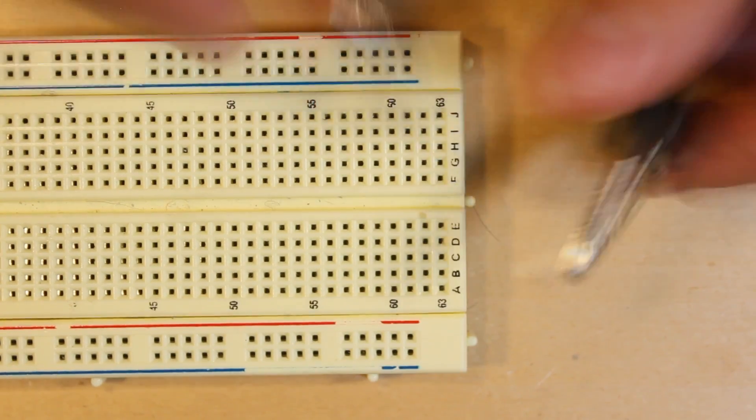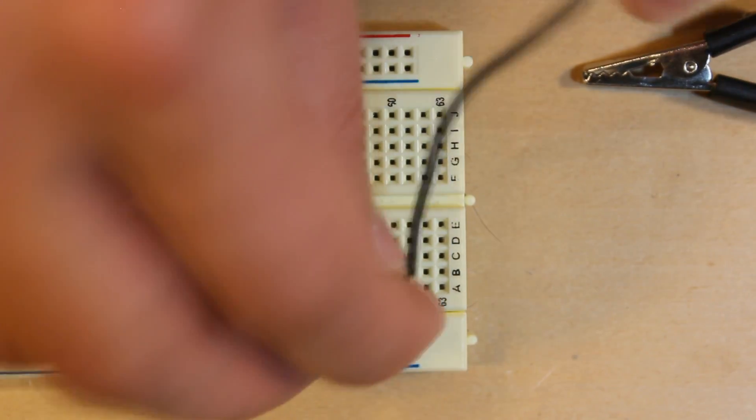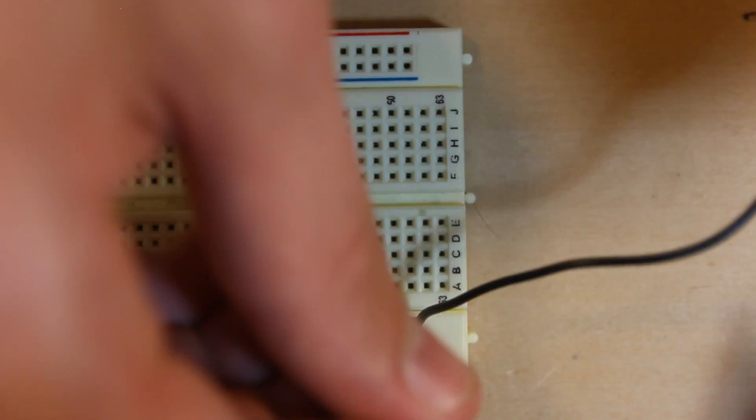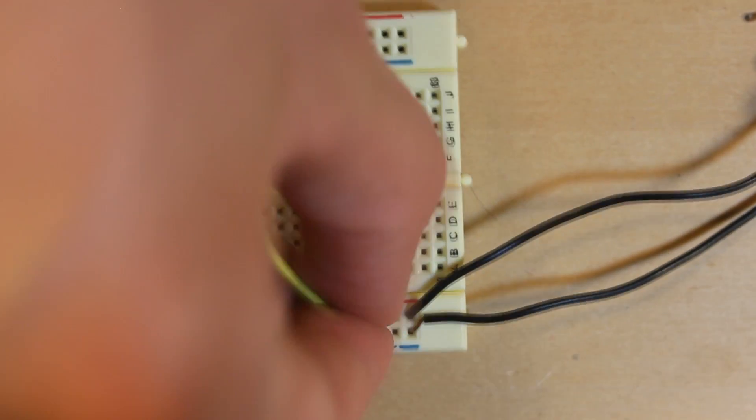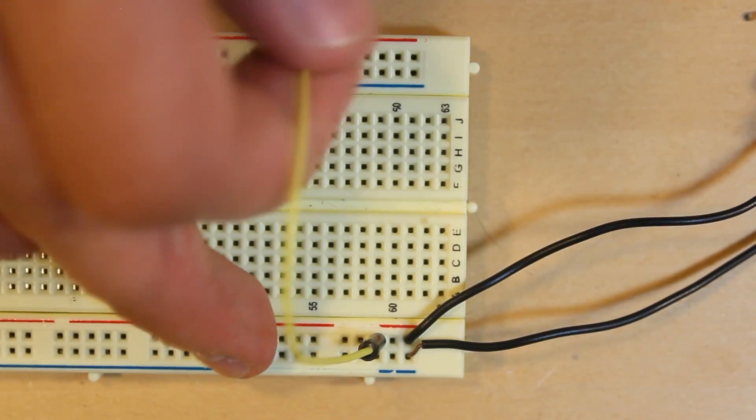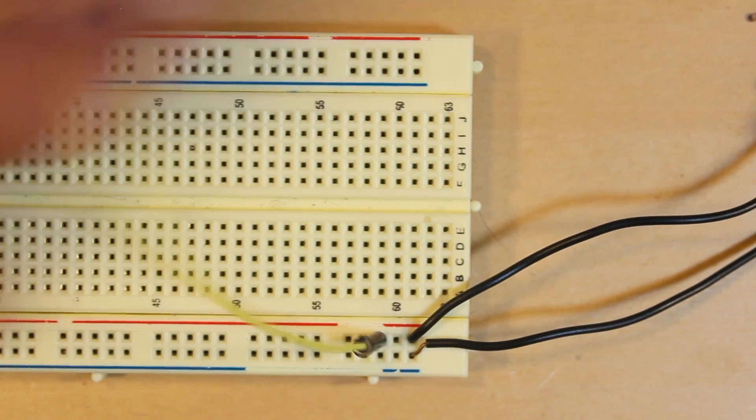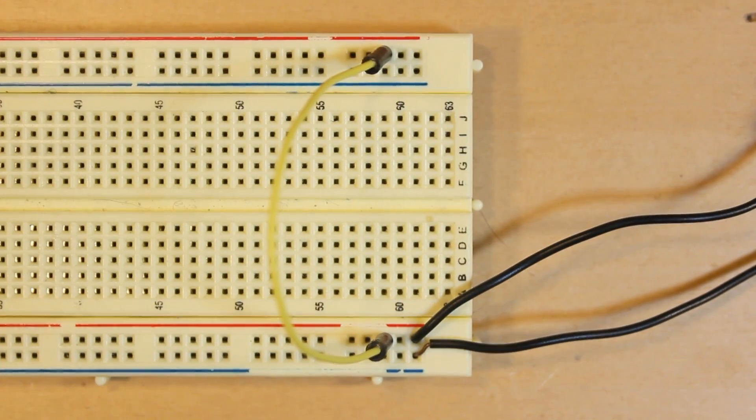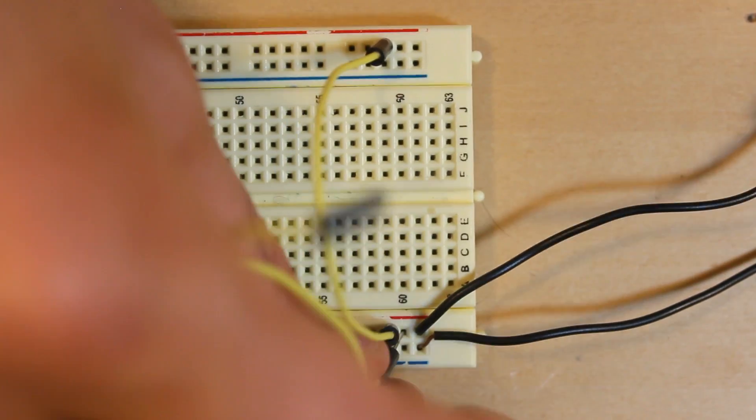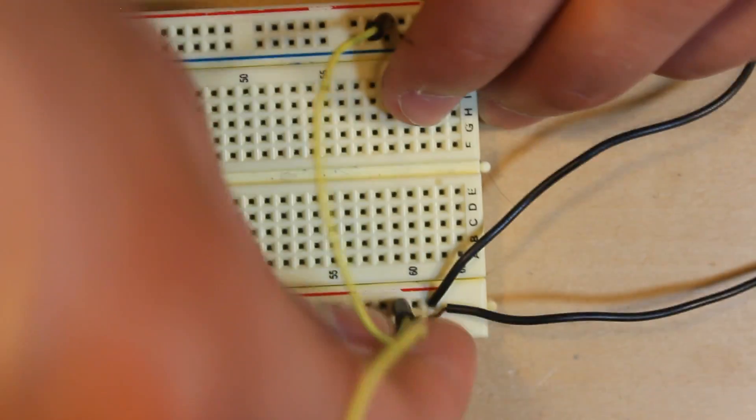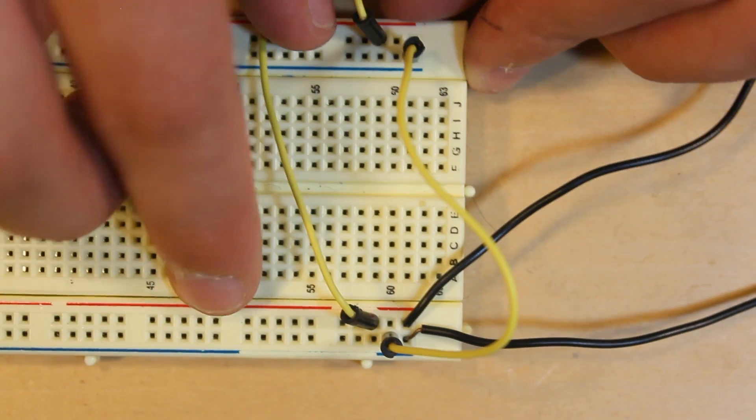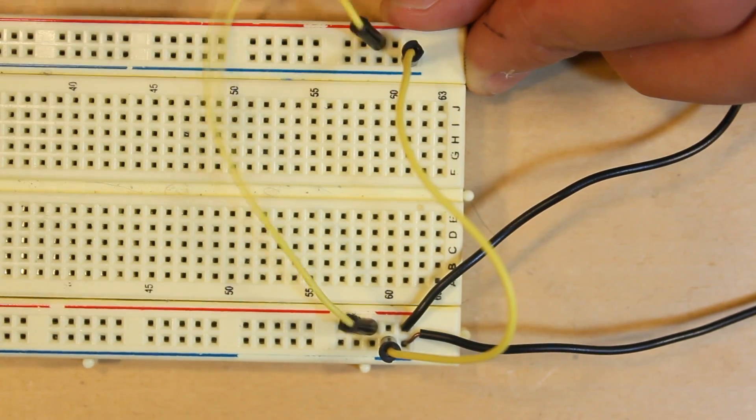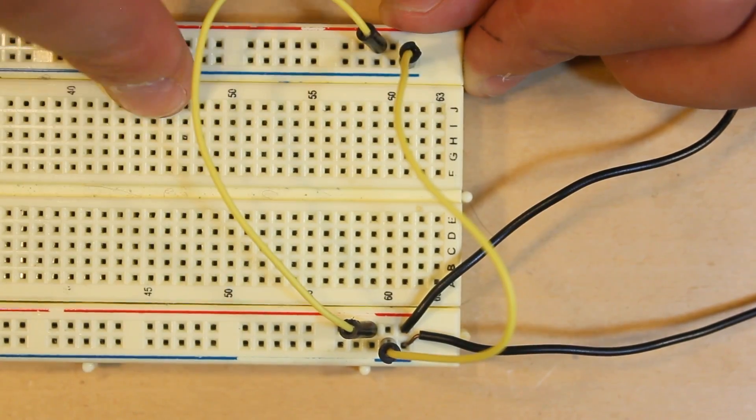The first thing you'll need to do is take your two jumper cables. Plug one into the positive rail of your breadboard, one into the negative rail. Then you're going to need to take two jumpers and connect one to the positive rail of this side and the positive rail of this side, because we're going to be using both sides of the breadboard. Make sure that the red is plugged into the red and the blue is plugged into the blue.